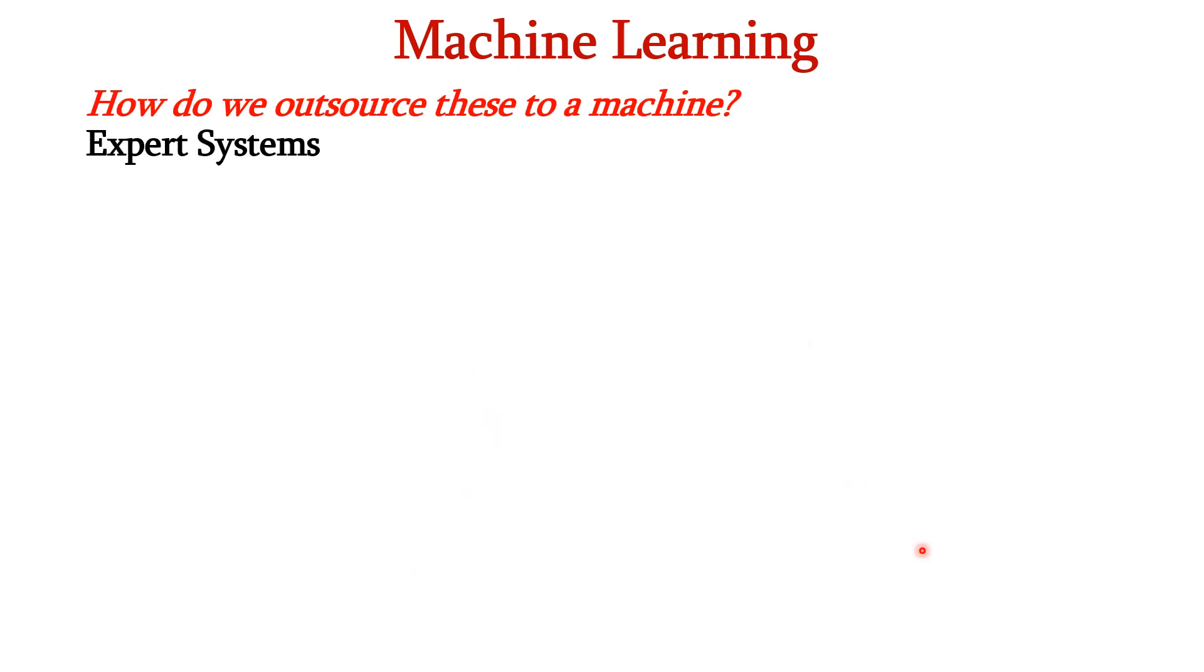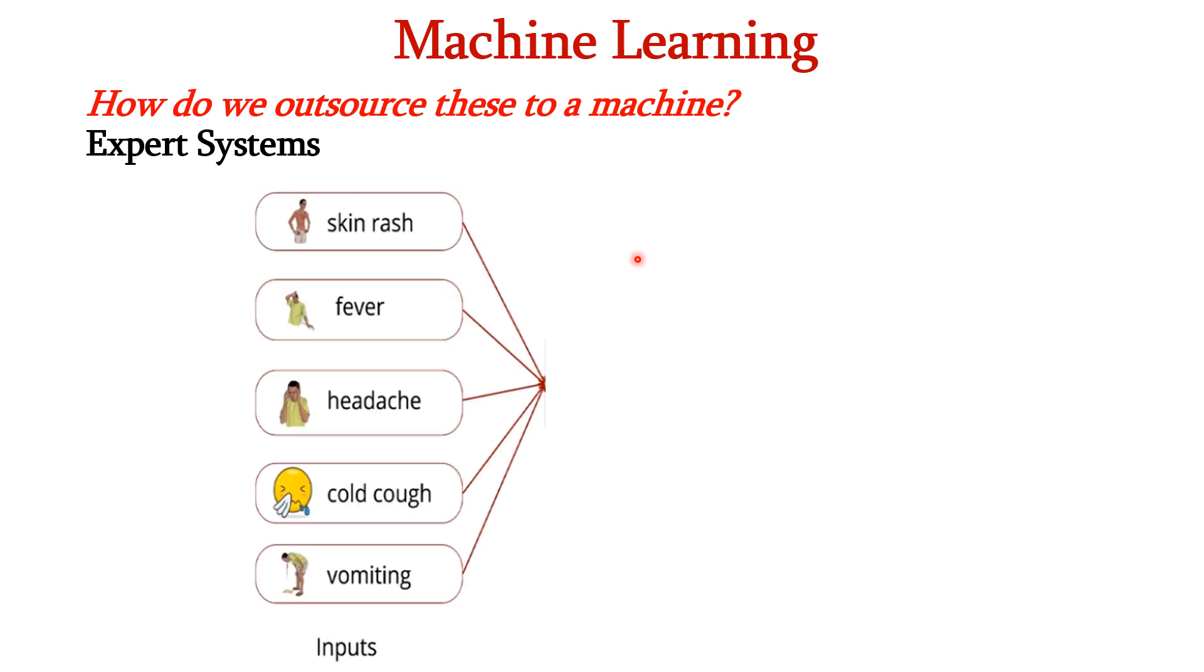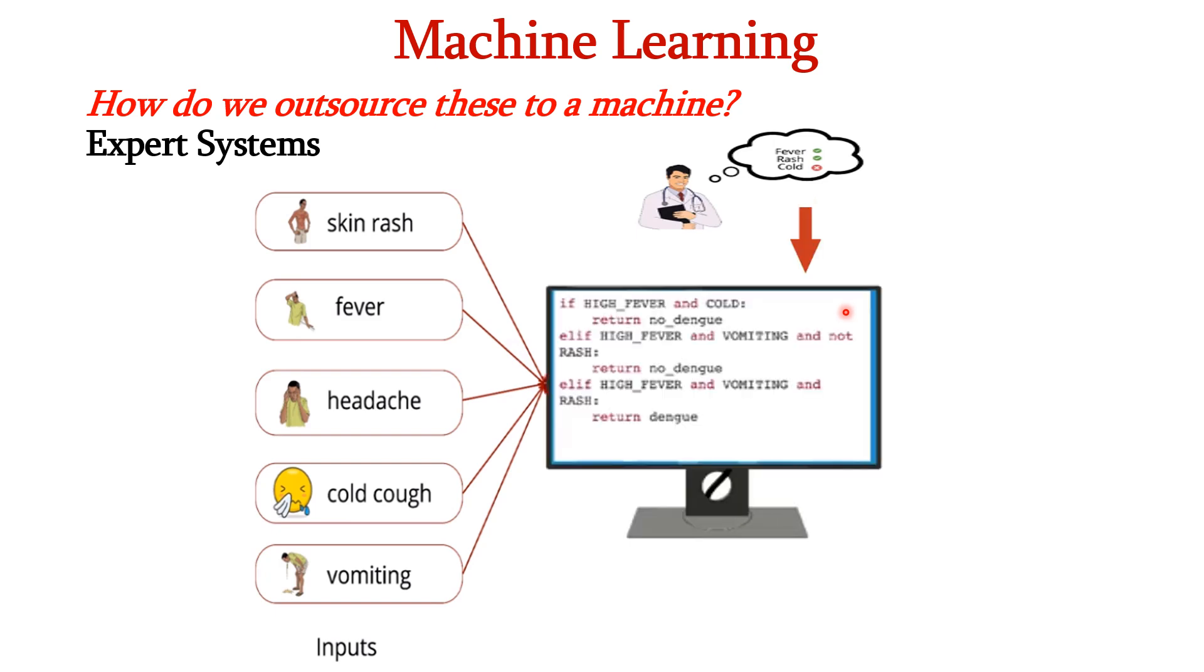How do we outsource these features and rules to a machine? Here comes the role of expert systems. Based on the insights gathered from the doctor, the programmer frames the rules which is in the form of if-then statements and feeds it into the computer. So once the input is given to the machine, the machine decides whether the patient is having fever or not based on the rules framed.